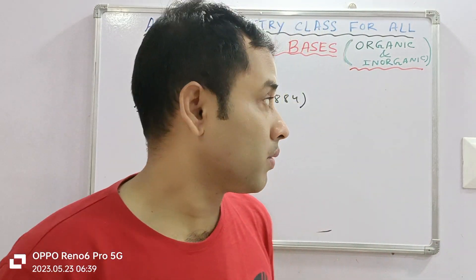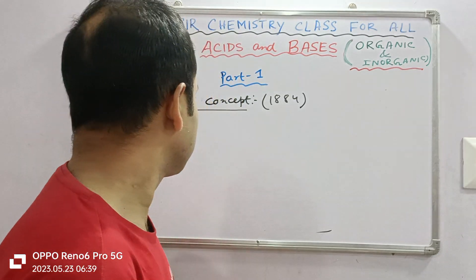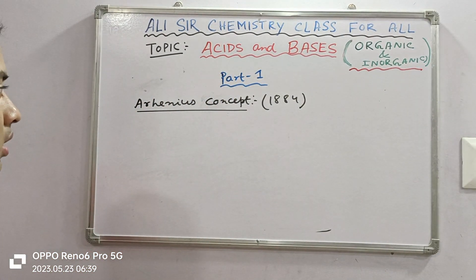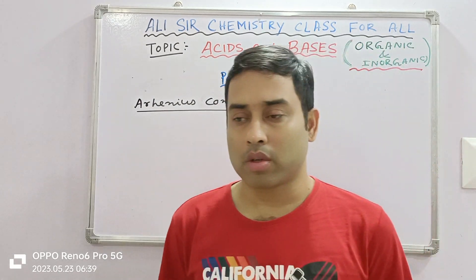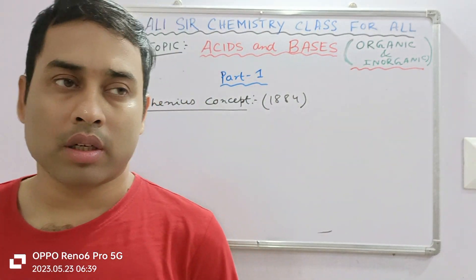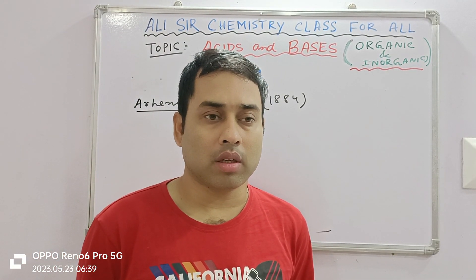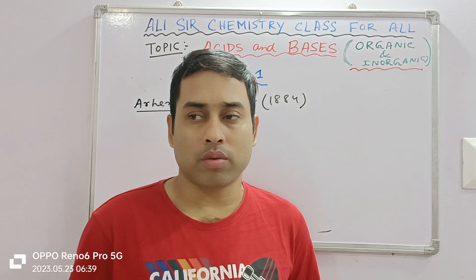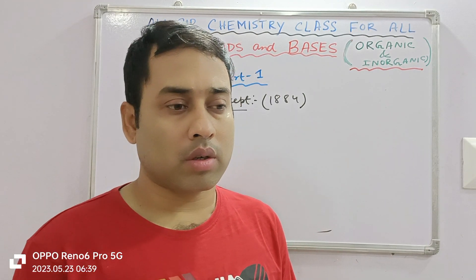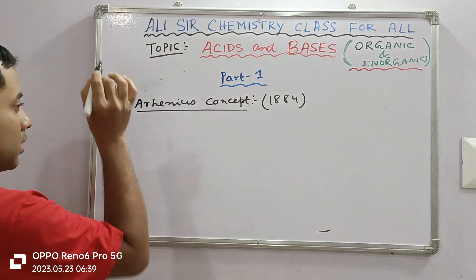I am going to start my first class with some concepts of acids and bases. The first concept of acids and bases will be the Arrhenius concept. All of you have studied this from class 10, 11, or 12 — whenever you studied acids and bases, you first need to know the concept with some generalization, some theories. So the first concept I will discuss here is Arrhenius acid and bases.